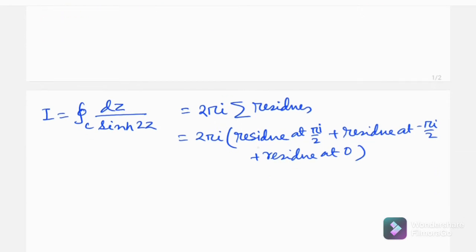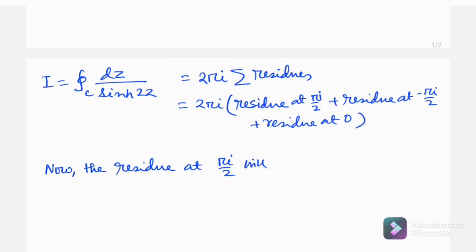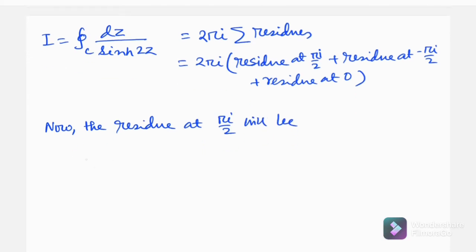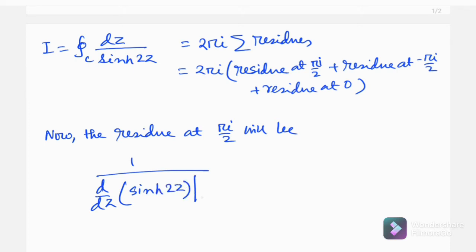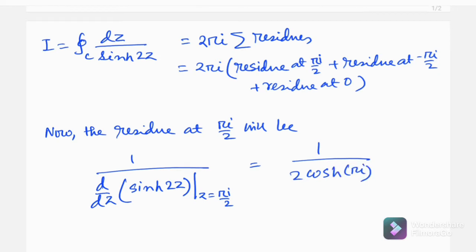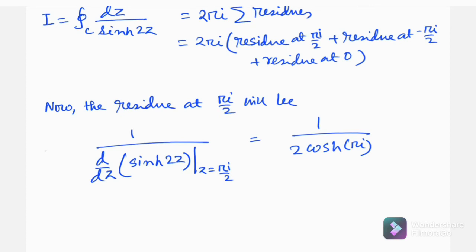Now let's find the residue at πi/2. Since these are simple poles, the residue is computed using the formula 1 divided by the derivative of sinh(2z) evaluated at z = πi/2. The derivative of sinh(2z) is 2·cosh(2z), so the residue at πi/2 is 1/(2·cosh(πi)).